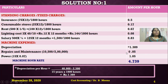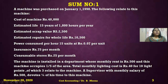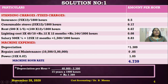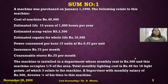Next is power. Power consumed per hour is 15 units, and each unit costs 0.07 rupees. So 15 × 0.07 = 1.05 rupees per hour is the power cost.